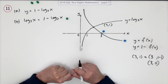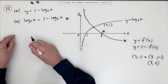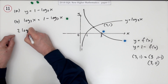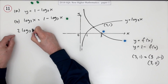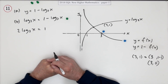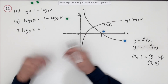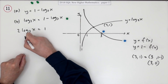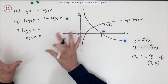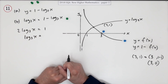Now solve for x. Bring the log term over — that'll be plus — and you now have two lots of log base 3 of x equals 1. There are just two steps to the answer: get rid of the 2, then get rid of the log.